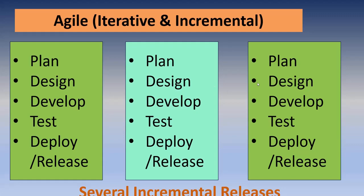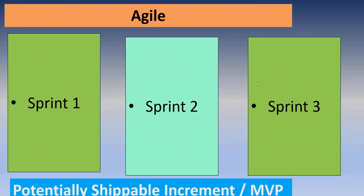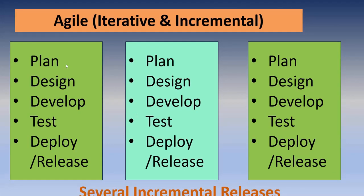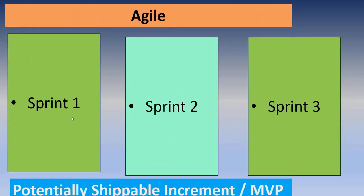In Agile, iterations are called Sprints. The entire project is broken into multiple sprints. In each sprint, you plan the features, do the design and development, and move to the next sprint. Sprint 1, Sprint 2, Sprint 3 — multiple sprints continue until the product is completed.